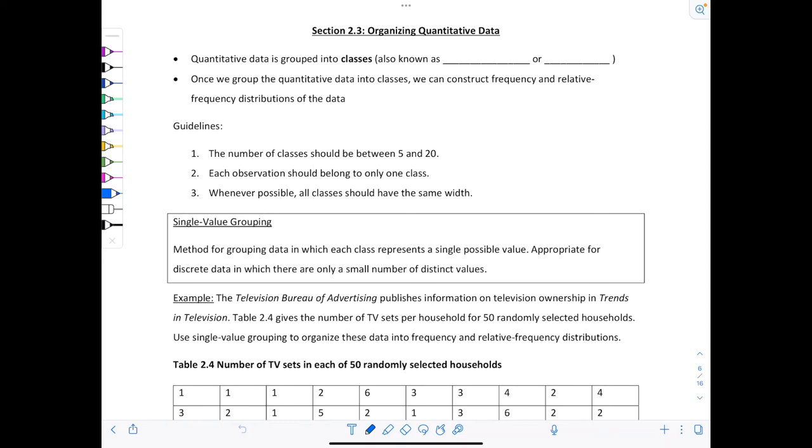Welcome back to Math TV with Professor V. This is section 2.3, 2.4, and 2.5 for introductory statistics. We're kicking things off with organizing quantitative data. Quantitative data is often grouped into classes, also referred to or known as categories or bins. If you hear any one of those terms, they all mean the same thing.